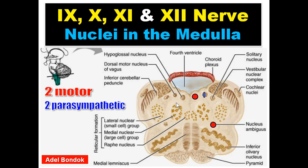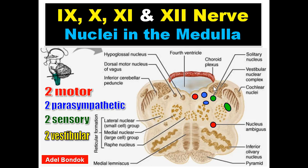The two parasympathetic nuclei are the dorsal motor nucleus of the vagus, located in the floor of the fourth ventricle, and the inferior salivatory nucleus for the glossopharyngeal nerve. We have two sensory nuclei: nucleus solitarius for taste sensation, and the spinal trigeminal nucleus for pain and temperature sensation from the face. And the last two are the medial and inferior vestibular nuclei.